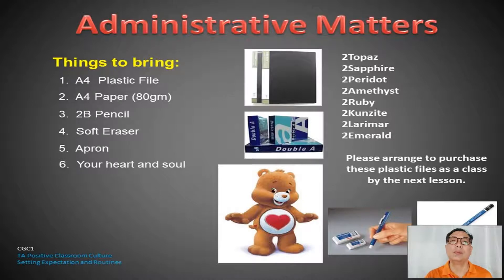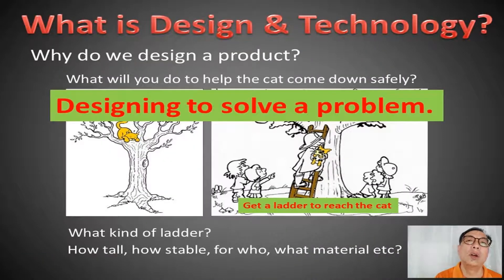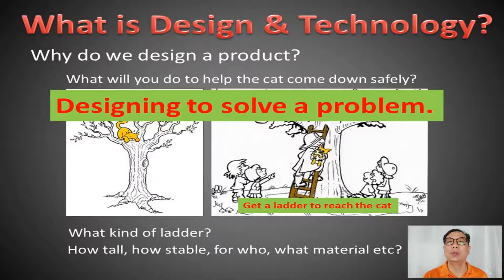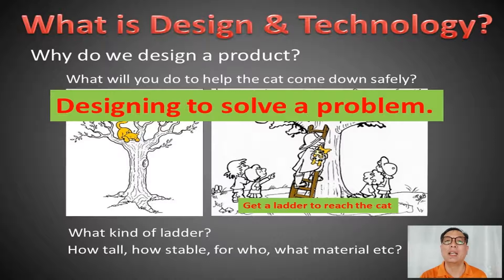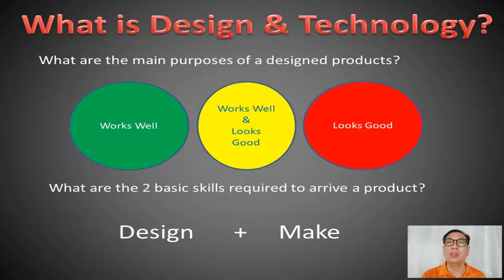Now, why do we do design? When we design a product, think about when you want to get a cat down a tree — you need a ladder, and you want to know the design specifications for that ladder. So D&T is designing to solve a problem. What is the main purpose? We want things to work well as well as look good, so that at the end of the day, it looks nice and is good to use.